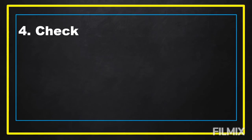The last step is we're going to check whether our answer is correct. We're going to use our total — four and three-fourths. Since we added the two fractions, this time we're going to subtract one of the fractions. We'll subtract four and three-fourths minus one and one-fourth, and check if our answer is equal to three and one-half.